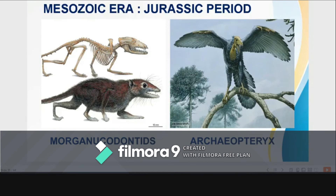The Jurassic period is characterized by lowlands, extensive seas and swamps, mountain building, warm climate, first angiosperms, abundant gymnosperms, first mammals — the Morganucodontids — first birds — the Archaeopteryx — spread of reptiles, and abundant insects and ammonites.